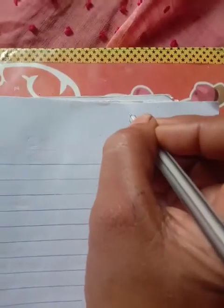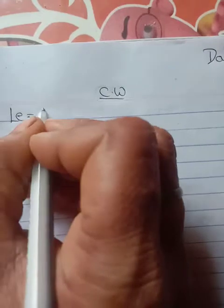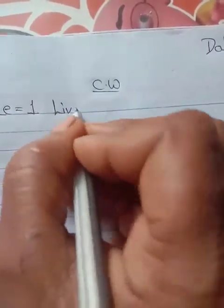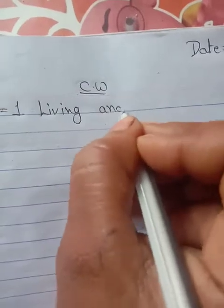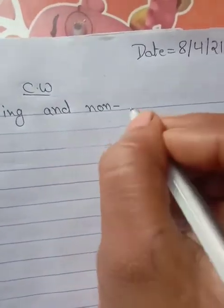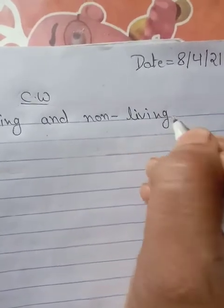Good morning, my lovely students. Welcome to your science class. Today we will do the question and answer of lesson one. First of all, mention the date — today is 8 April 2021. CW: Lesson one — Living and Non-Living Things.